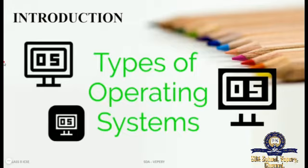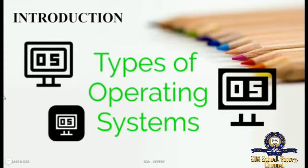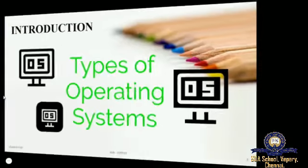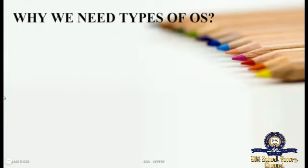Now you know what are the types of operating system. We already know the uses and the categories of operating system used in a computer. Nowadays we mostly use Windows operating system. Many operating systems are available and those operating systems function under different categories. Windows, Linux, Unix, Mac OS - all those operating systems have something to do with the types of operating system.